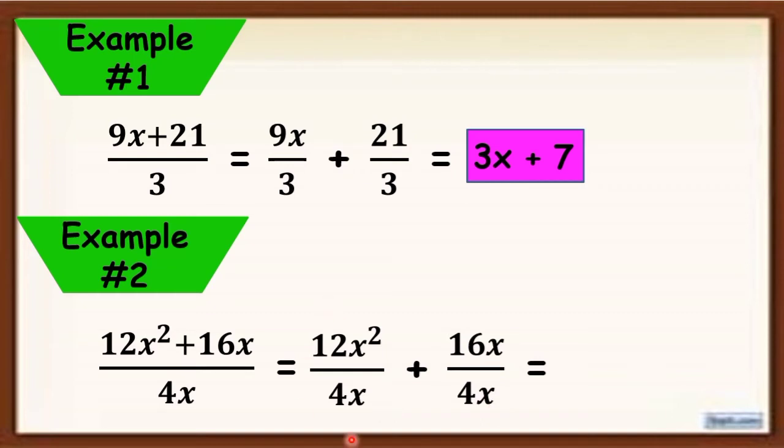Don't forget to apply the law of exponents when dividing with the same base. Divide the numerical coefficient, then copy the base and subtract the exponents. So, 12x squared divided by 4x is equal to 3x.